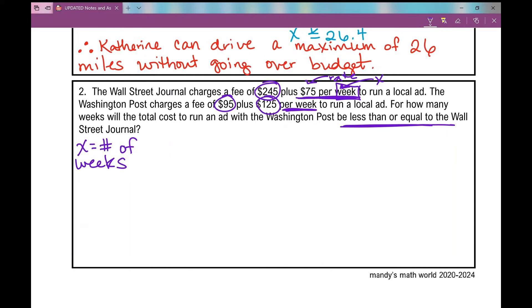Now, in this type of problem, there's a little more that's involved than in number one. On one side of my inequality, I'm going to put all of the information for the Wall Street Journal. So the Wall Street Journal charges a fee of $245 plus $75 per week. And this represents the Wall Street Journal.